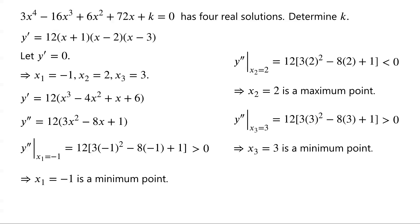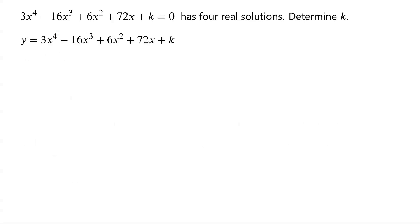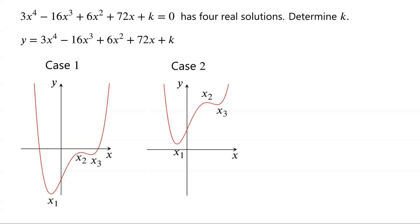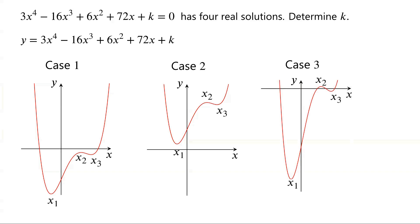So far, we know that the quartic polynomial has two local minima and one local maximum. For the quartic equation to have four real roots, the two minimum points x₁ and x₃ must lie below the x-axis, and the maximum point x₂ must lie above the x-axis. Therefore, the minimum values y₁ and y₃ must be less than 0, and the maximum value y₂ must be greater than 0.